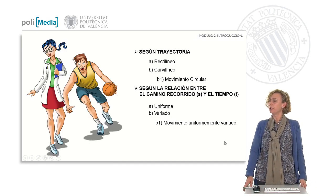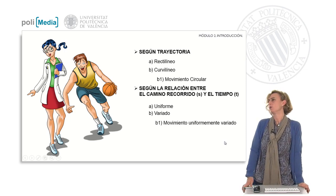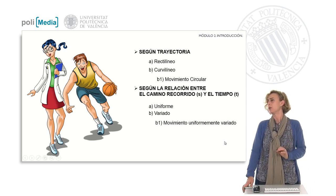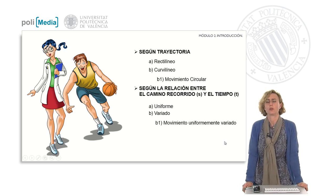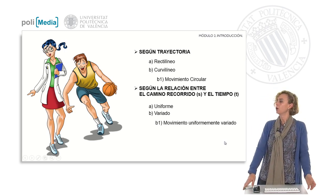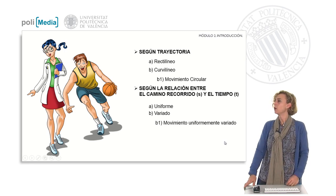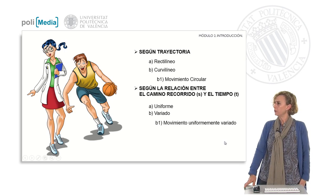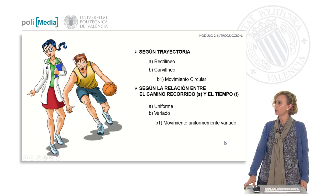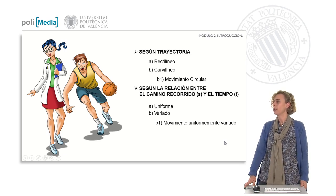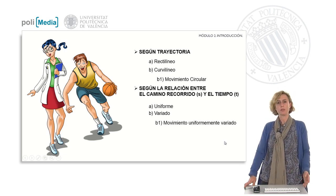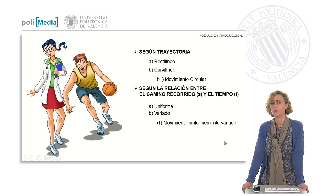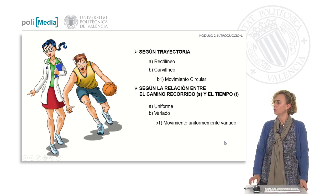We can categorize the different types of motions to which an object can be subjected by considering the trajectory. In this case we discuss rectilinear motion or curvilinear motion. As a specific case of curvilinear motion, we will study circular motion. Alternatively, we can categorize them based on the relationship between the distance travelled and time — in this scenario we refer to uniform motion or varied motion. A particular case of varied motion is uniformly varied motion.